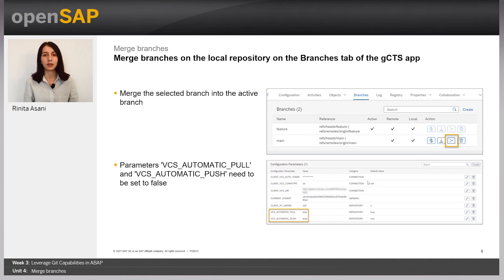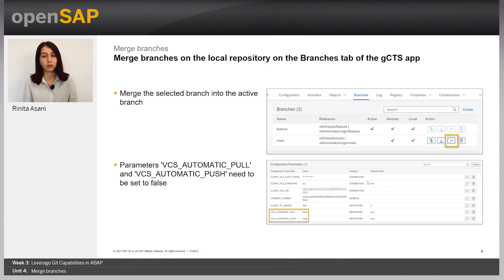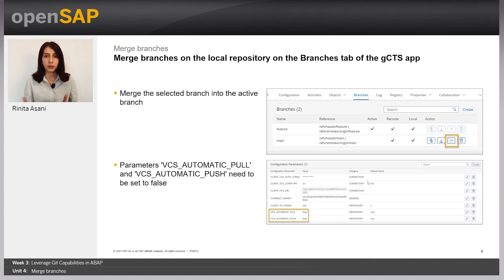Let's see how this works in the GCTS app. In the GCTS app there is a tab called Branches where we can see all branches — active and inactive ones. There are some available actions you can perform. For example, the first one is comparison — you can compare the branches. And what we are interested in is the third one, which makes a merge: it merges the selected branch.